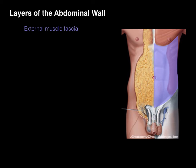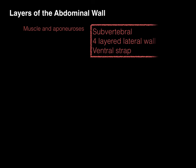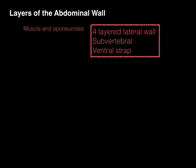The external muscle fascia is deep to the hypodermis and covers the outside layer of the whole somatic muscle plane. The muscle and aponeurosis layer comes from the hypaxial somite muscles. There is a subvertebral muscle, a four-layered lateral wall muscle, and a ventral strap muscle. I'm going to cover the four-layered lateral wall first and the ventral strap. The subvertebral muscle — the psoas — will be covered in the posterior abdominal wall lecture.